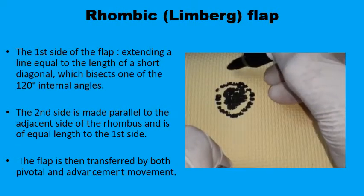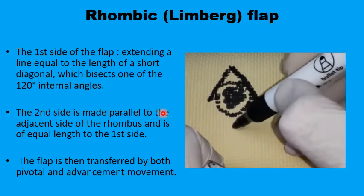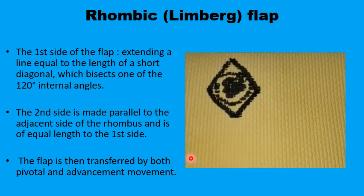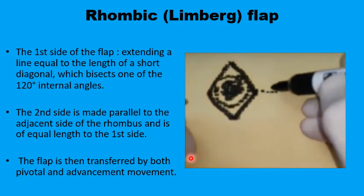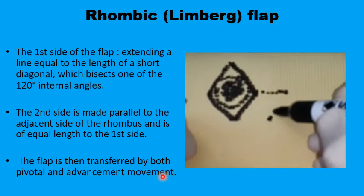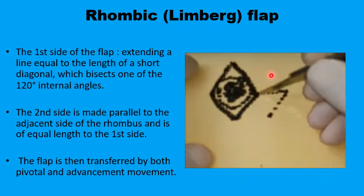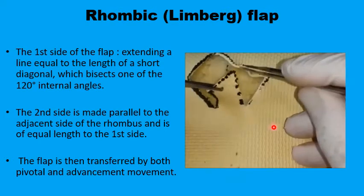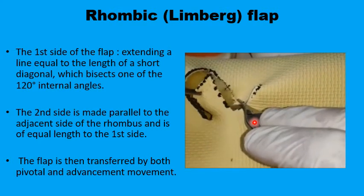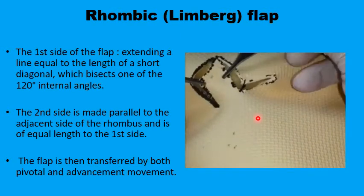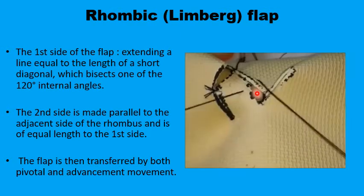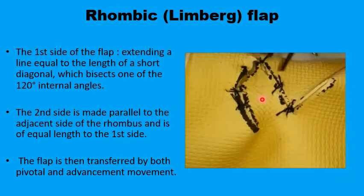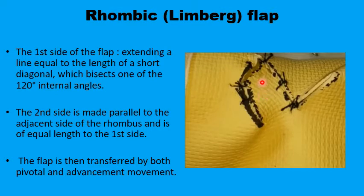The technique itself is straightforward: draw the 60-degree angle, mark the rhomboid, extend the short diagonal to the outside equal to the length of the sides of the rhomboid, and draw the second limb parallel to one of the adjacent sides — giving you the rhomboid flap to close the defect. The first suture is placed at the apex of the flap meeting the apex of the wound, carrying most of the tension, followed by the two sutures at the angles of the rhomboid, then the remaining sutures.